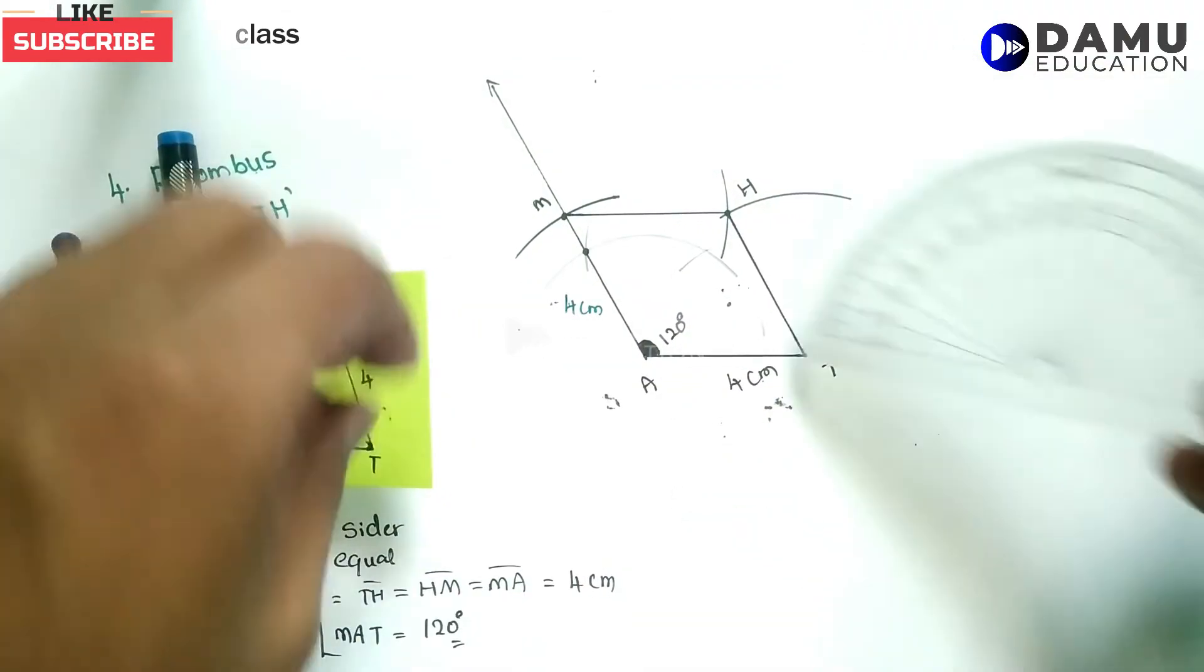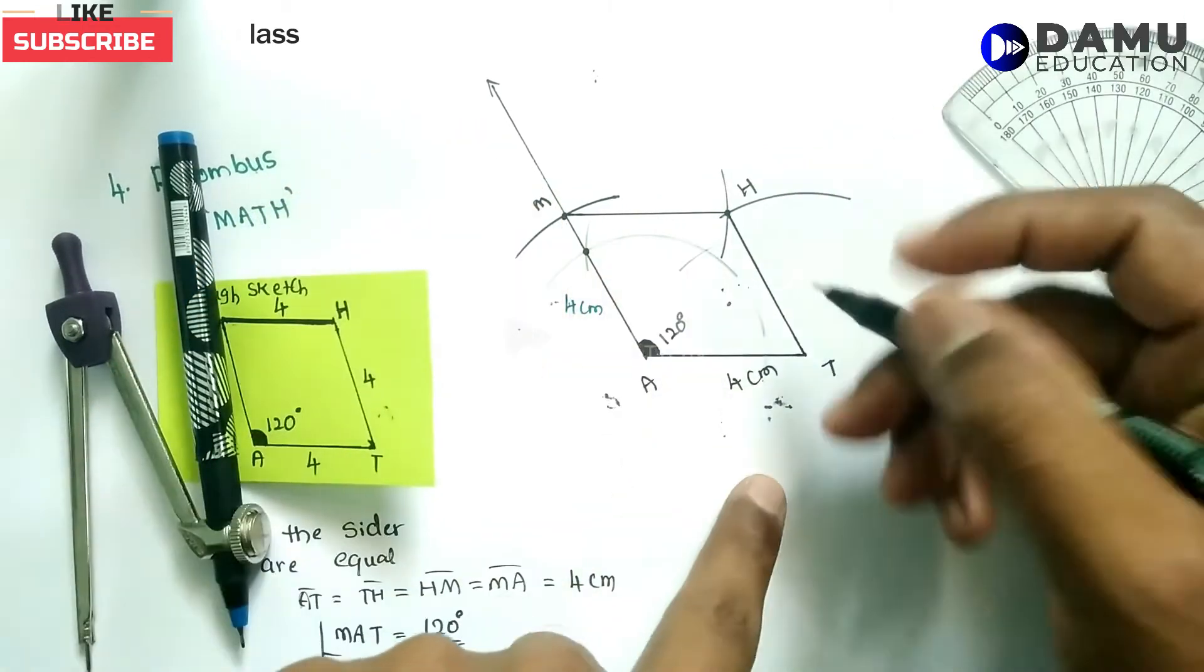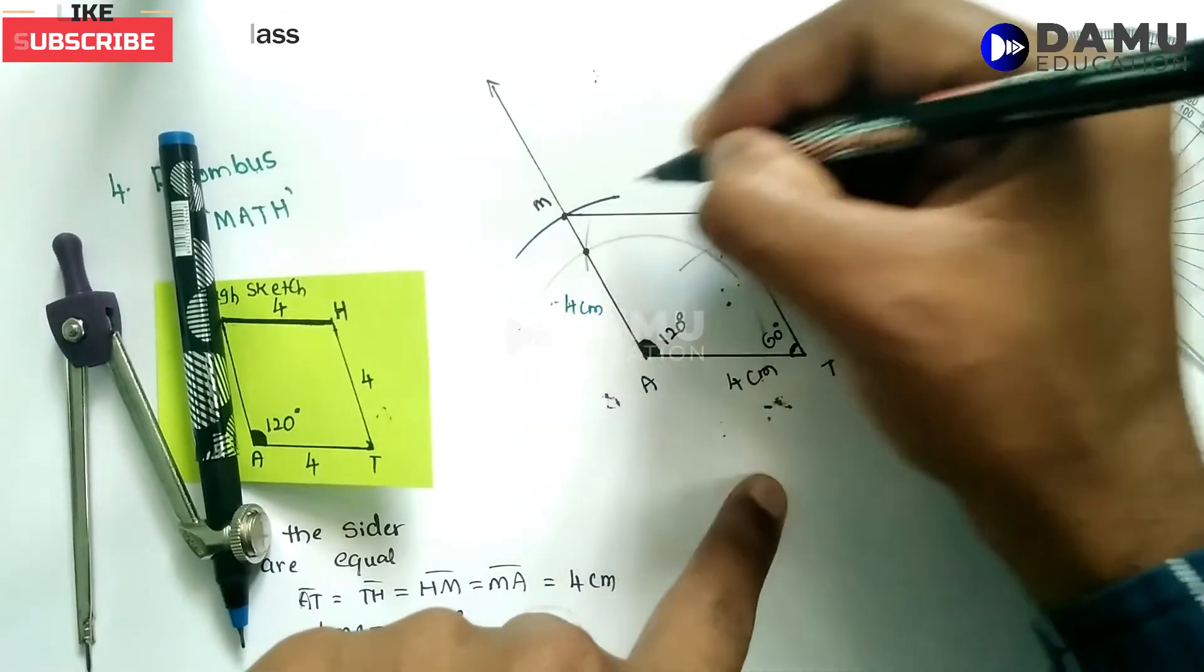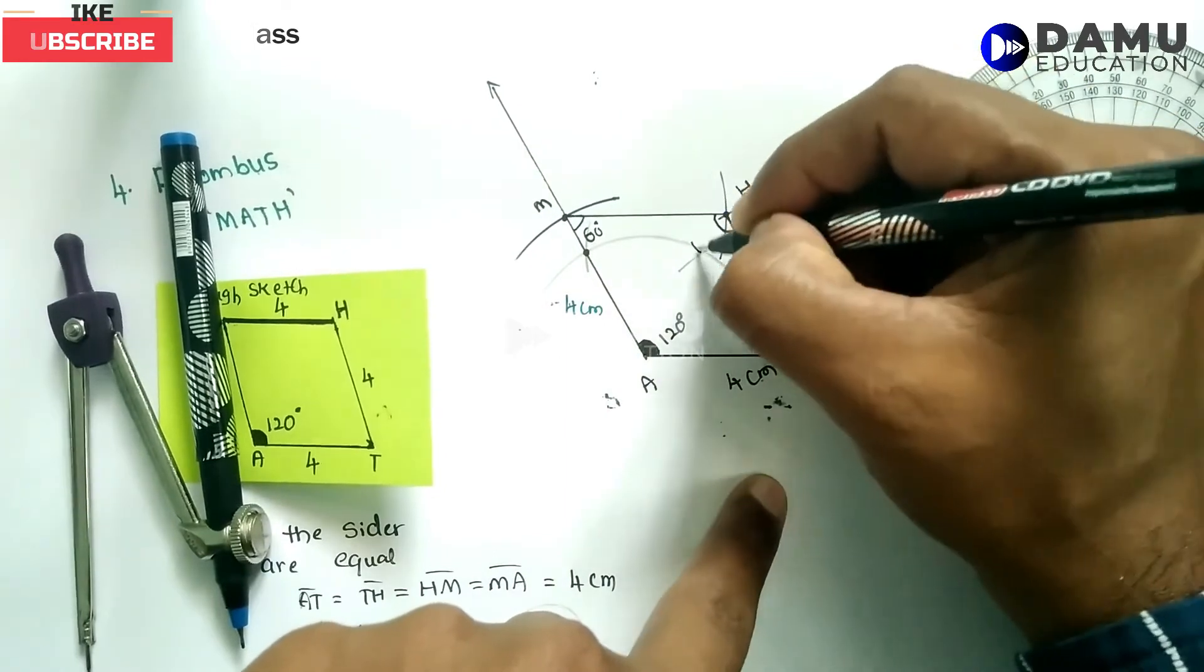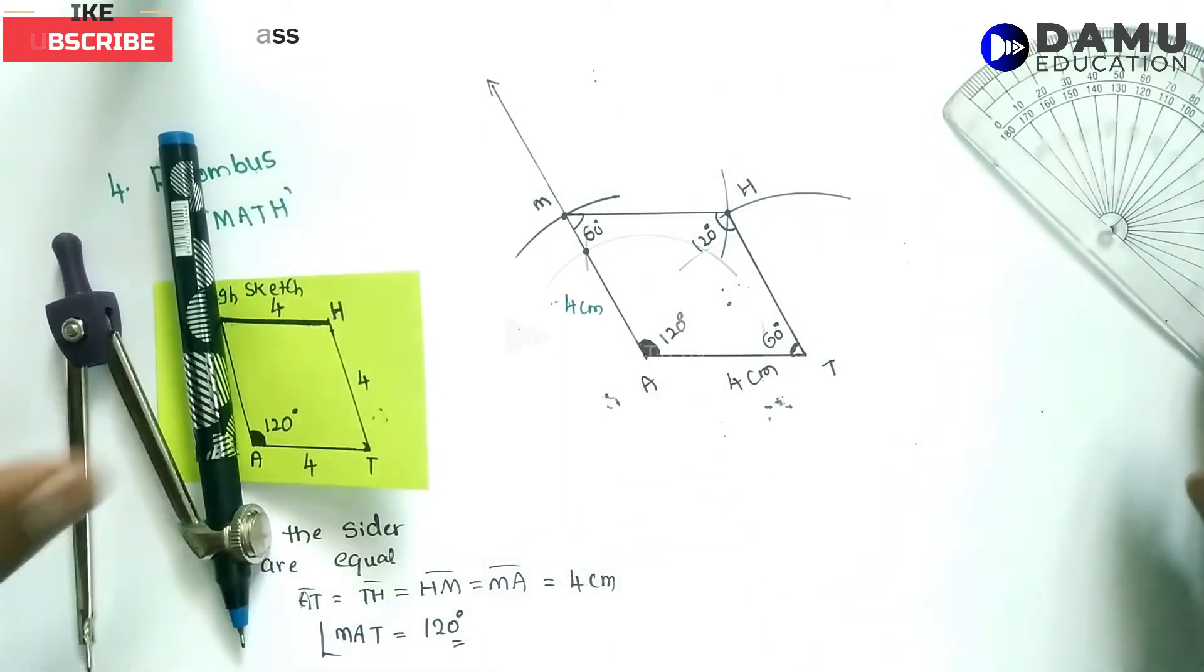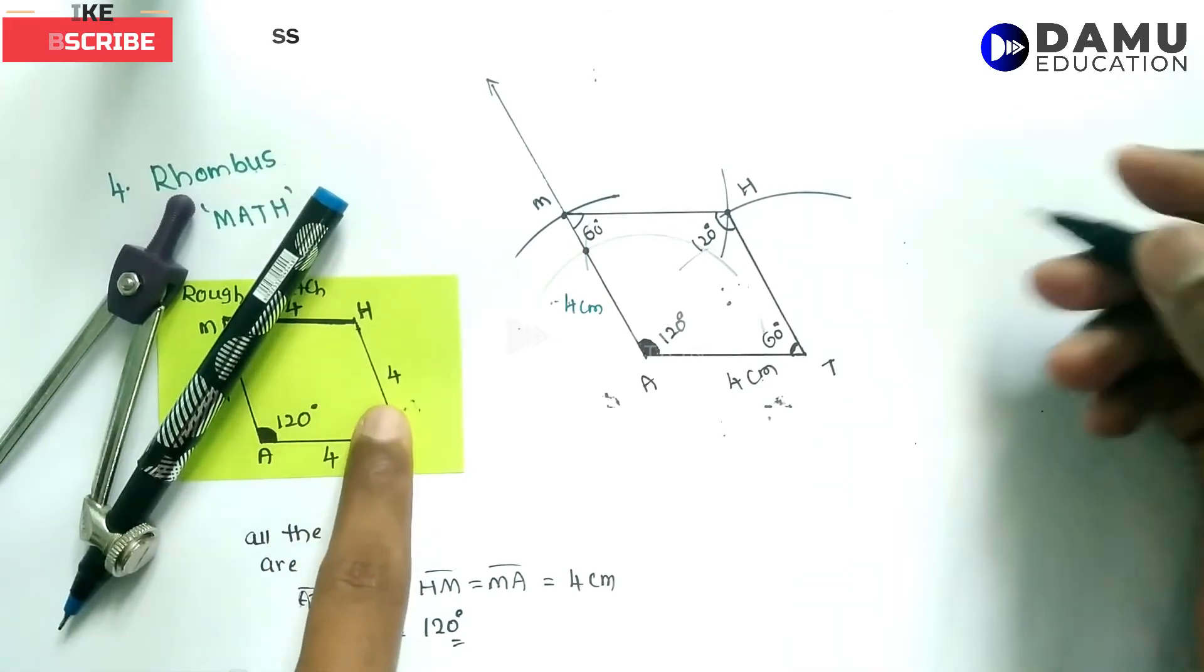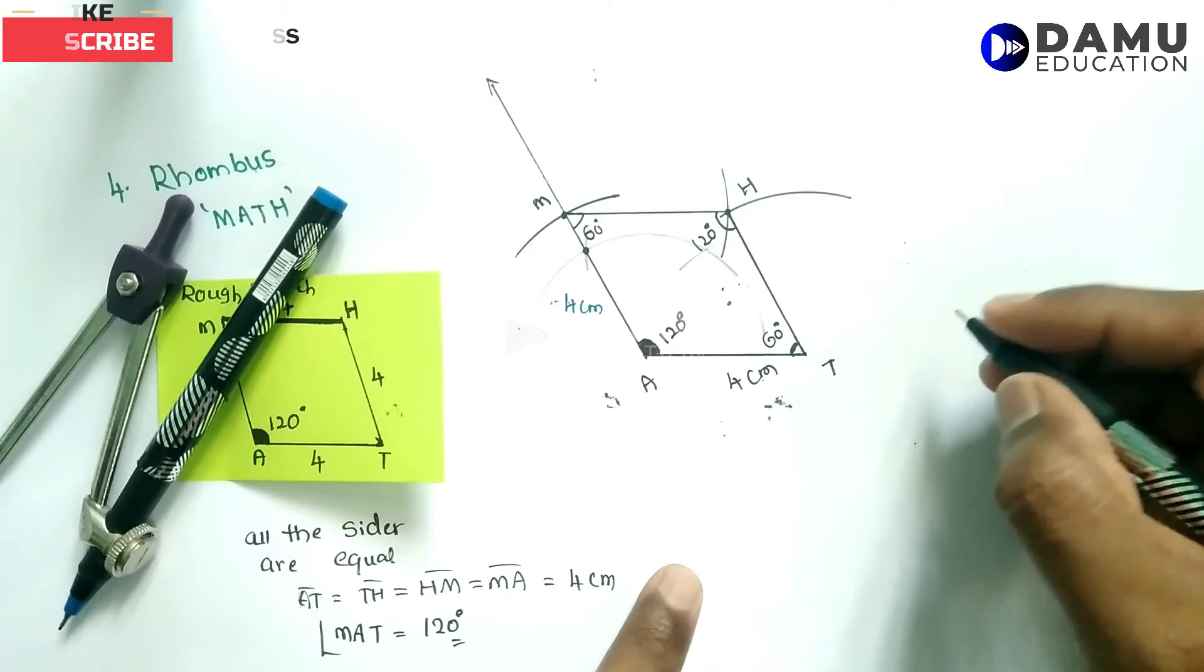If you measure this angle, we get exactly 60 degrees. The adjacent angles are 60 degrees at both T and H. At M, we get 120 degrees. Why? Because in a quadrilateral, opposite angles are equal.